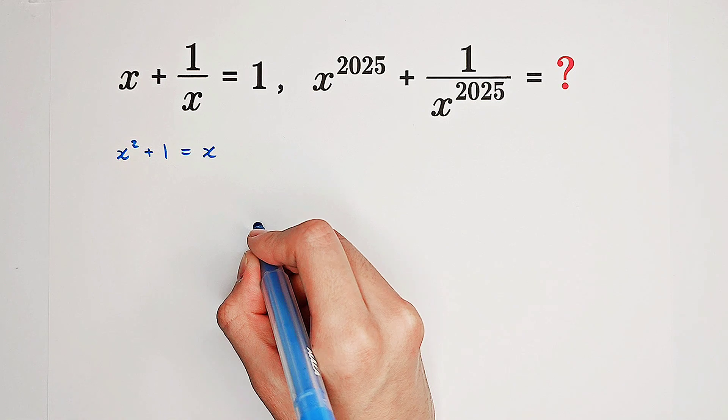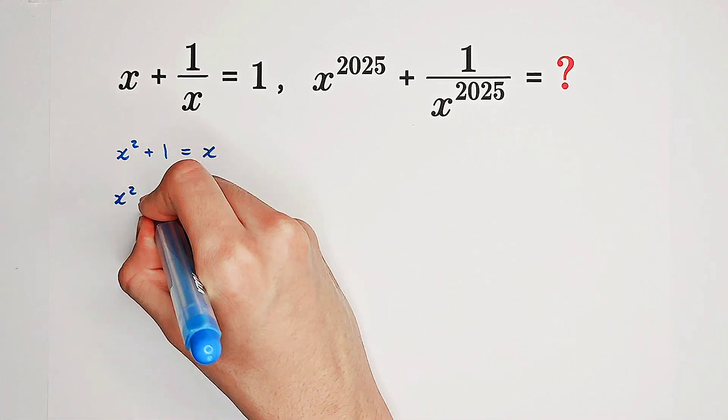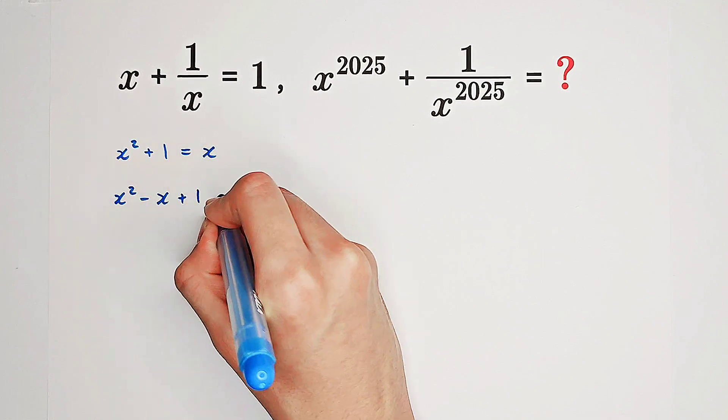There is no denominator anymore, and we're very happy about it. So x squared minus x plus 1 equals 0.